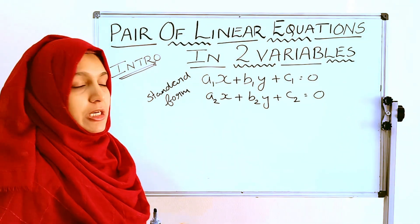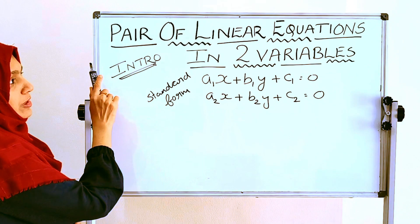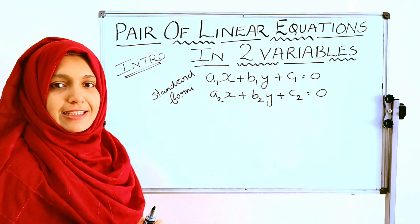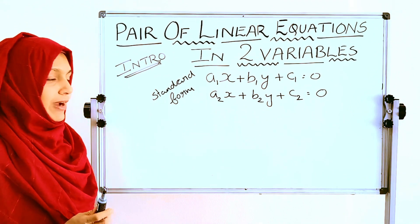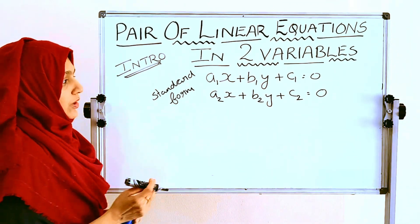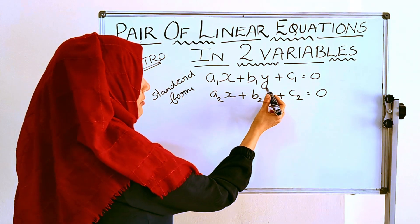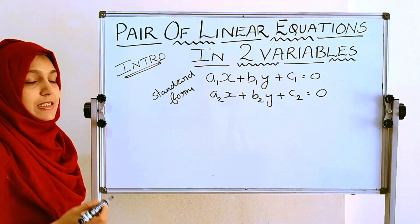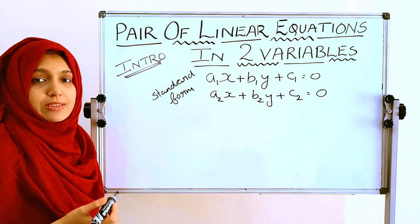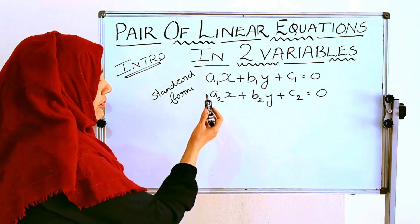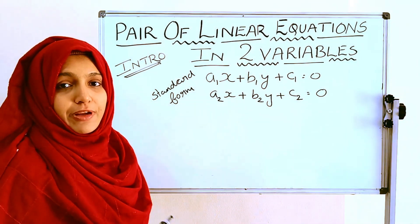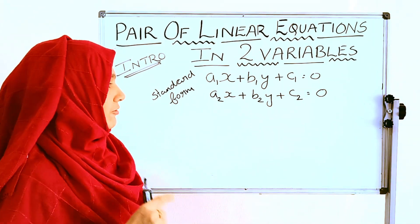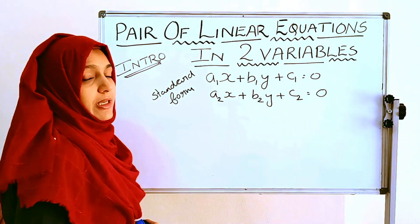We are taking two equations because it is a pair of linear equations. Here a1x plus b1y plus c1 equal to 0 and a2x plus b2y plus c2 equal to 0 is the standard form. A1 and a2 are the coefficients of x. Similarly, b1 and b2 are the coefficients of y, and c1 and c2 are the constants.